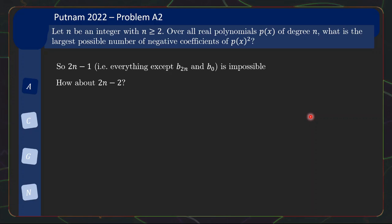So 2n minus 1 as the answer is impossible. How about 2n minus 2, which means b_2n, b_0, as well as one more term, we are allowed to be negative. I mean, we are allowed to be positive. So here's a construction that makes everything negative except b_2n, b_n, and b_0.